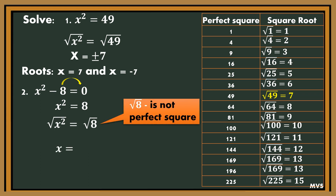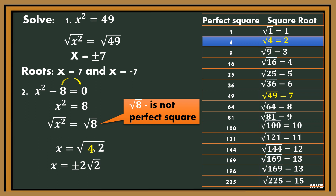Since 8 is not a perfect square, we need to factor it. What are the factors of 8 wherein one factor is a perfect square? 4 times 2. So x equals the square root of 4 times 2. Which of these two factors is a perfect square? 4. So what is the square root of 4? Use the table at the right side. It's 2. Therefore, x is equal to plus or minus 2 square root of 2. The roots are 2 square root of 2 and negative 2 square root of 2.